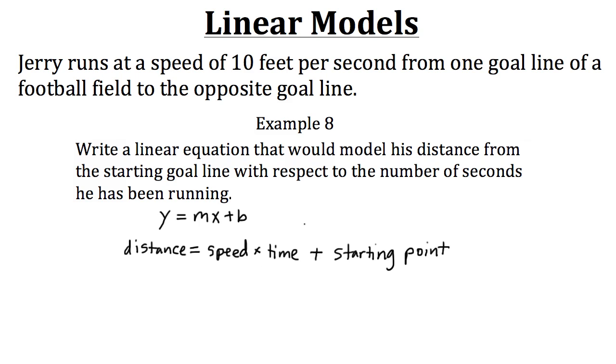So if we were to use this model, we want to plug in what we know about this current situation. So first of all, distance, we could just use d as the output variable for distance. And that's going to equal the speed, which for Jerry is 10 feet per second. So we'll have 10. And then times our time, which is our input. So let's use t to represent time. And then plus the starting point. Well, if he's starting at the first goal line, he hasn't gone a distance yet. So our starting point would be plus zero, which we don't need to write that. So for this particular situation, the linear equation d or distance equals 10 times t would model this particular situation.